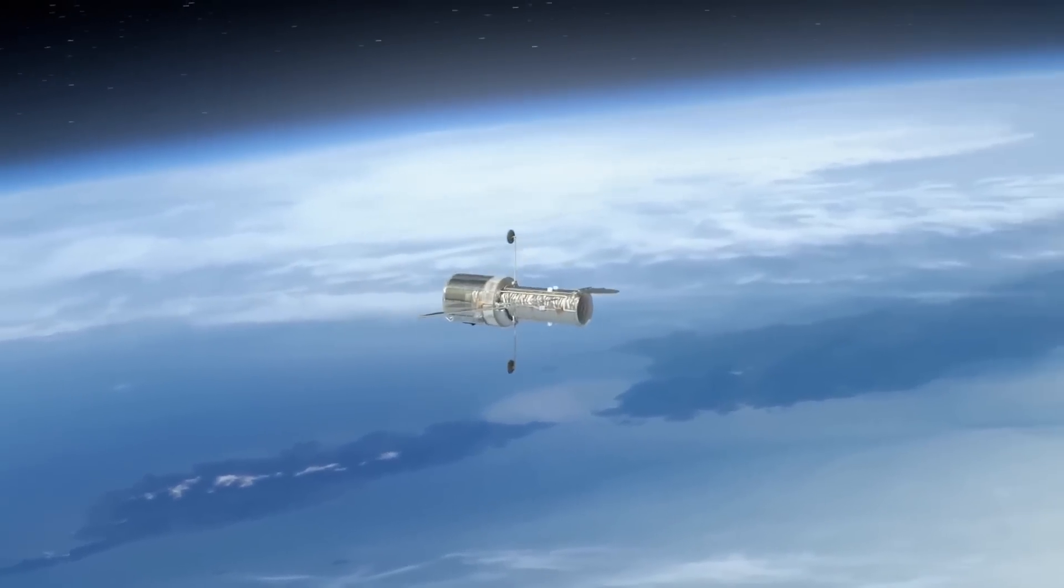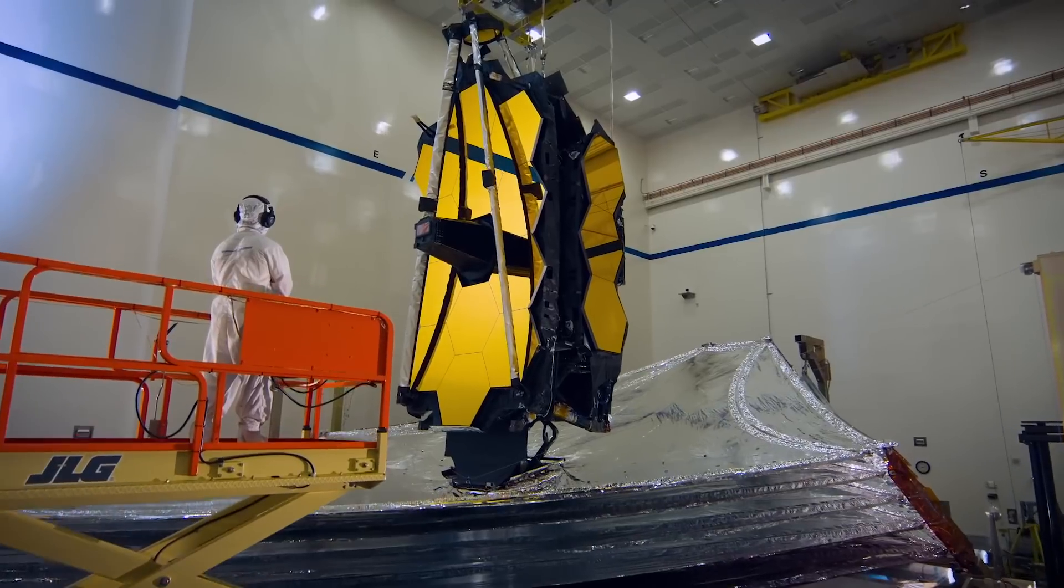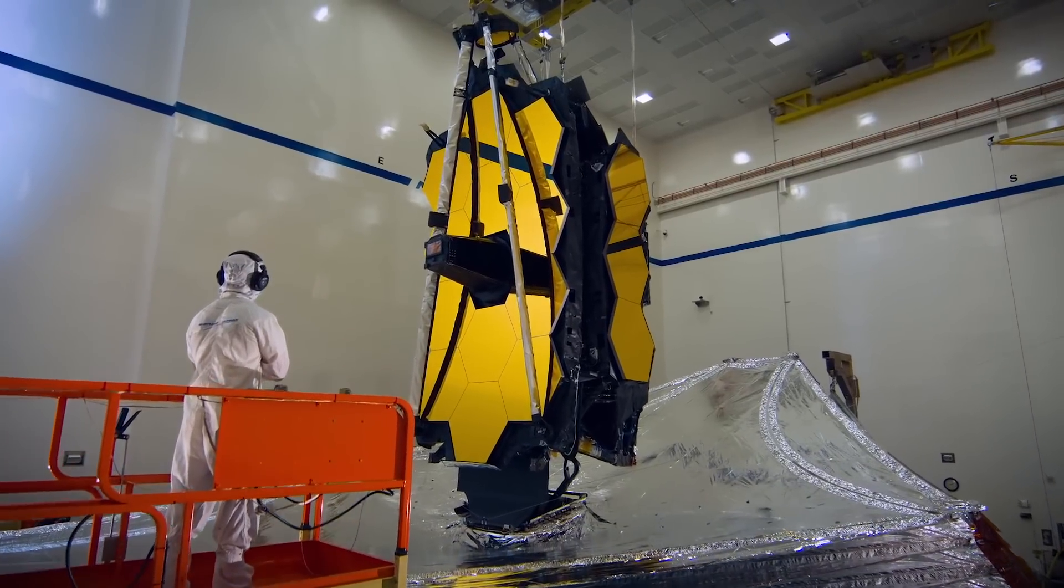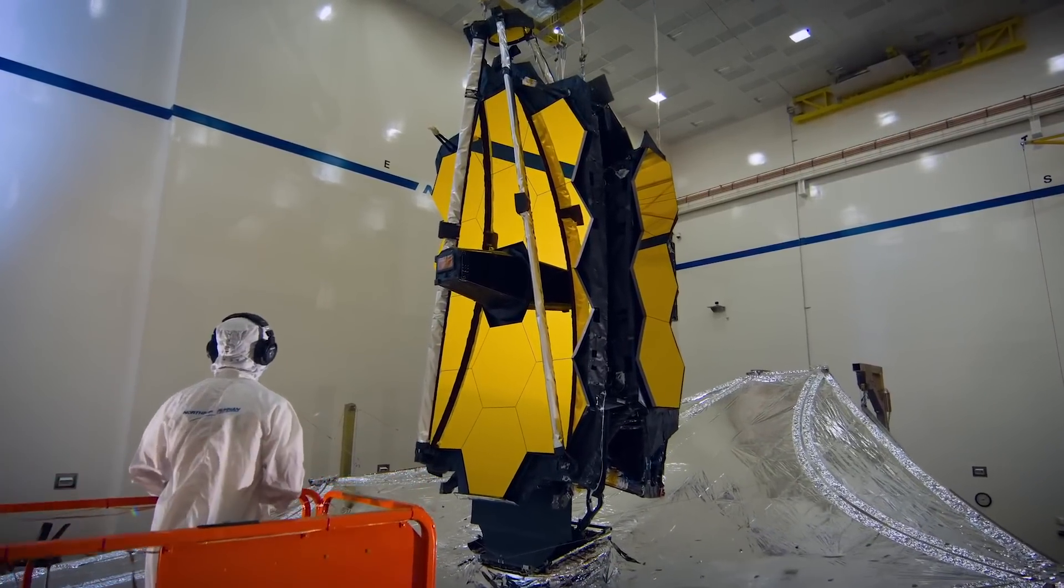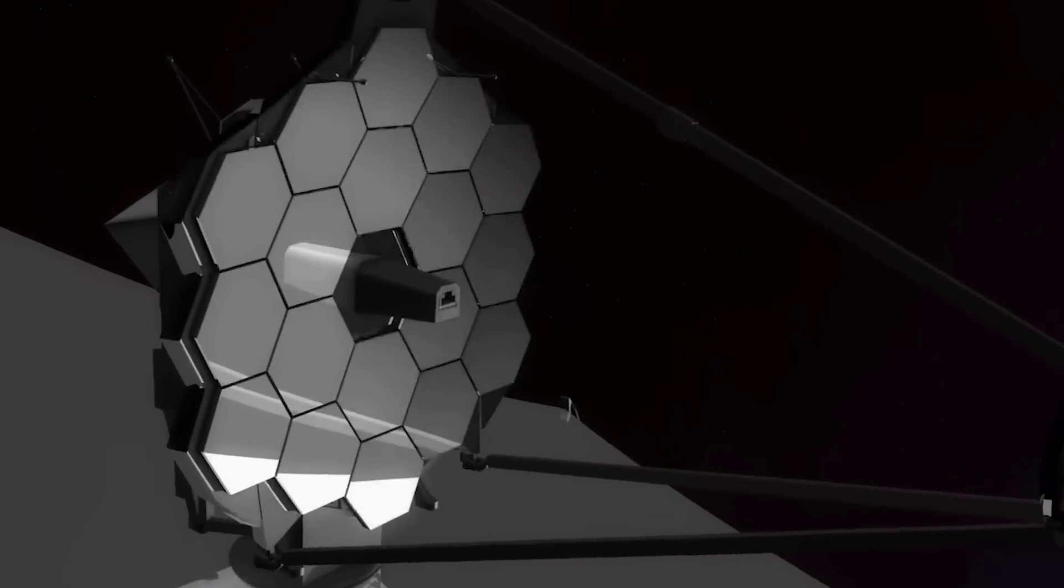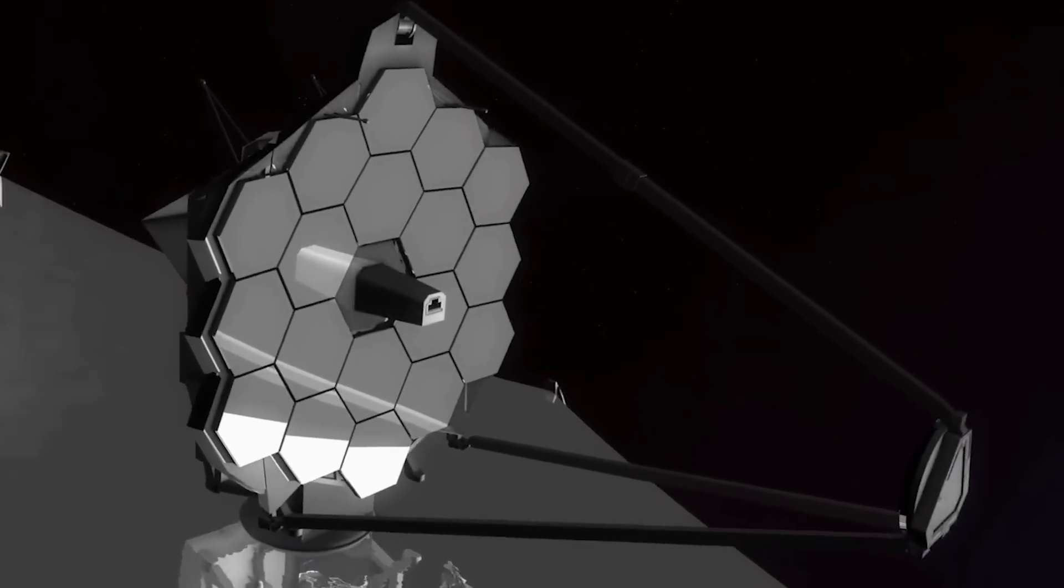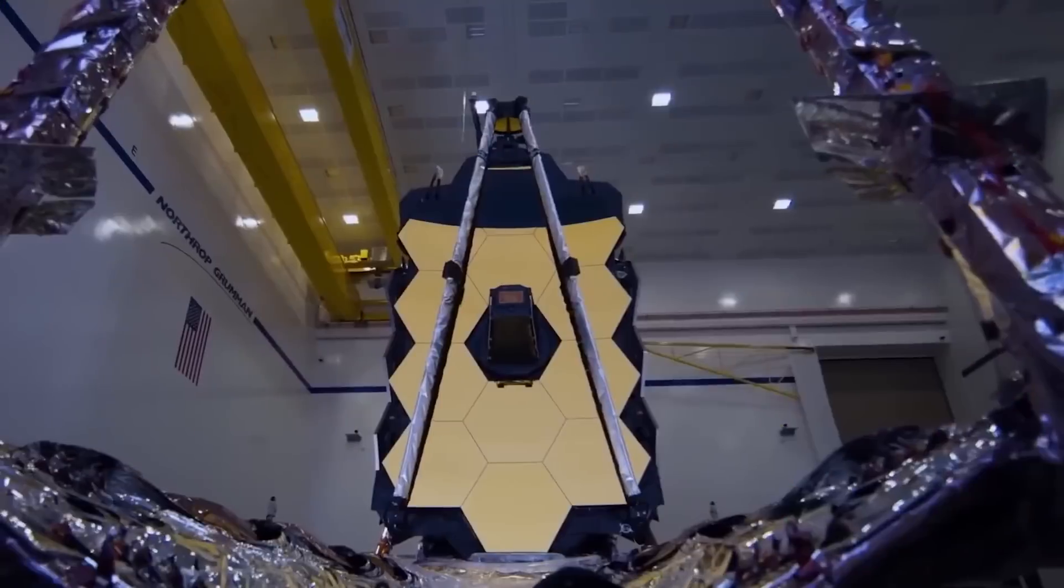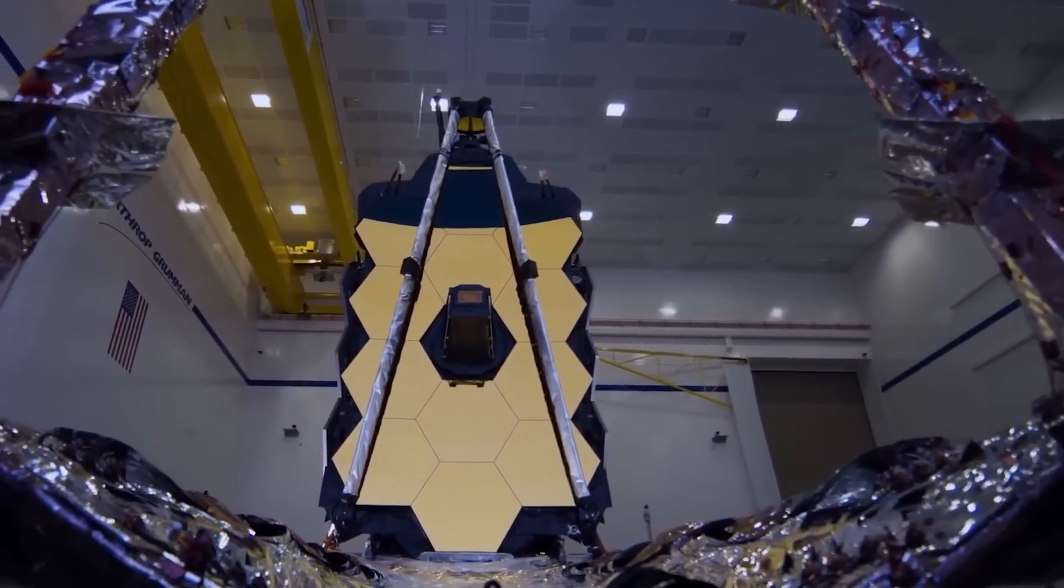However, according to NASA's JWST website, the JWST will primarily be an infrared telescope, tuned for 600 to 28,000 nanometers. It will therefore only be able to perceive orange and red light, as well as a large variety of longer wavelengths beyond that. It won't be able to see green or blue light.